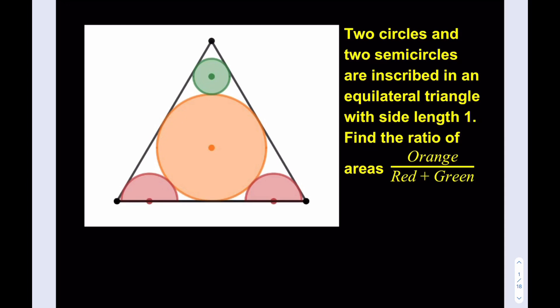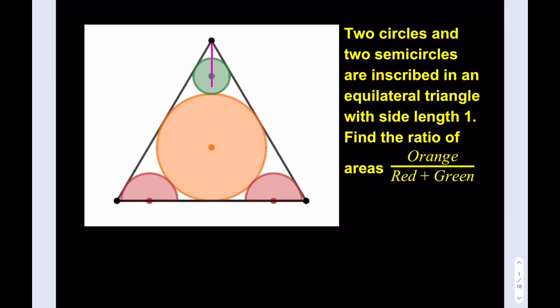At this point you may just want to pause the video and try this problem yourself. Let's get started. We do have the orange circle which is centered nicely, and we have the two semicircles that are symmetrical. Obviously, if I just find one of them, it will be good. And the green one sits just on top of the orange one. Let's make some important connections here.